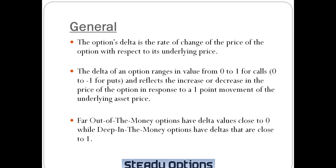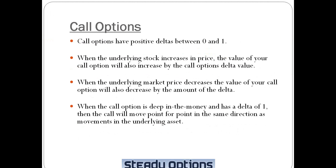Far out of the money options have a Delta value close to 0, and deep in the money options have deltas that are close to 1. Call options have positive deltas between 0 and 1, and some sites refer to this as 0 to 100, which is the same thing. So 0.50 Delta is the same as 50 Delta or 50%, and 1 Delta is the same as 100 Delta or 100% Delta.